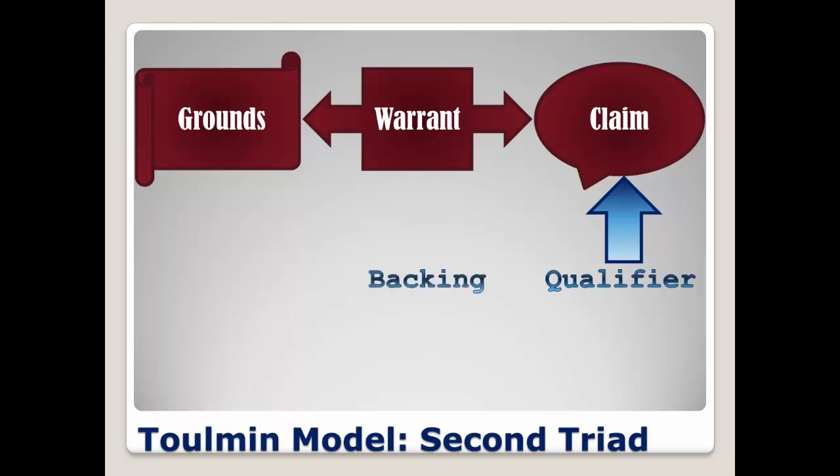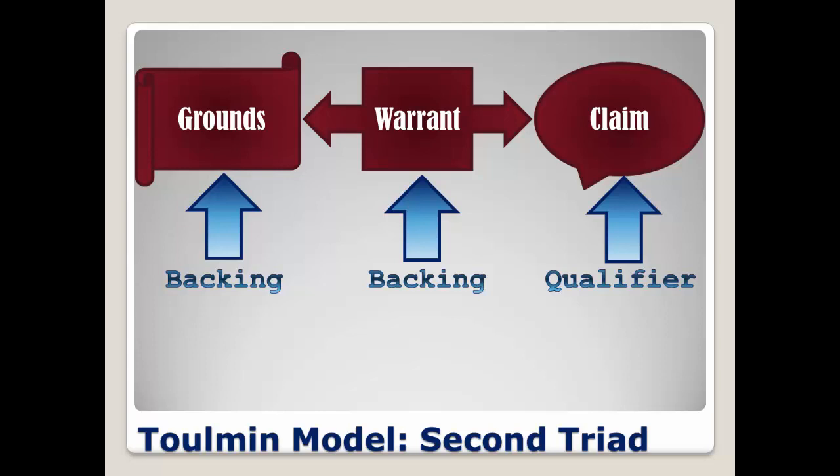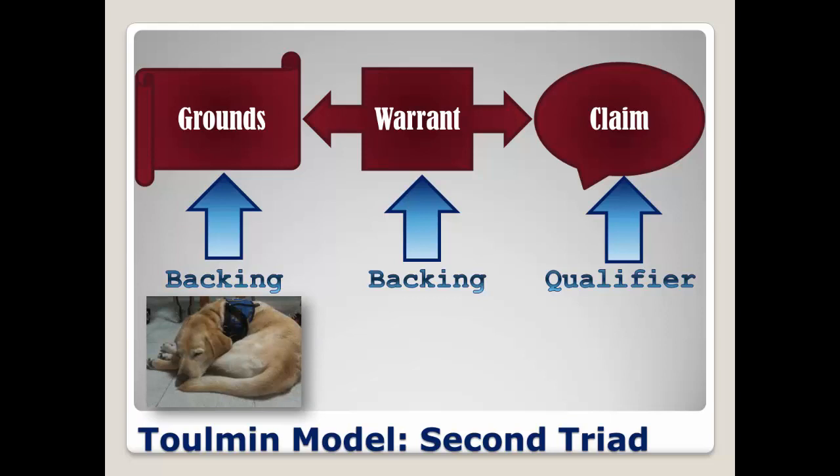Backing provides additional justification for the warrant. It uses evidence or reasoning to make warrants that might be questionable more acceptable to an audience. In our example about Rennick, I might tell you all about the training service dogs go through using reasoning, or I could cite some statistics — but in either case, I'm backing up the warrant. Backing can also be used to support the grounds. If I offer evidence that you are either unaware of or don't trust, I might need to strengthen it by qualifying the source or using evidence or reasoning to support it. I might pull out Rennick's birth certificate — yes, he has one — to prove that he is a golden lab, or point to the vest that identifies him as a service dog.